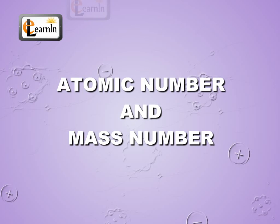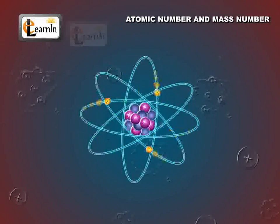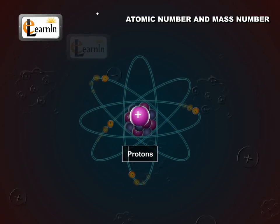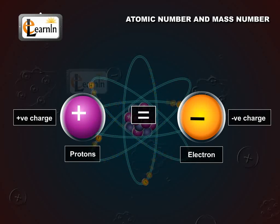Atomic number and mass number. The presence of positive charge on the nucleus is due to the protons in the nucleus. The charge of a proton is equal but opposite to that of an electron.